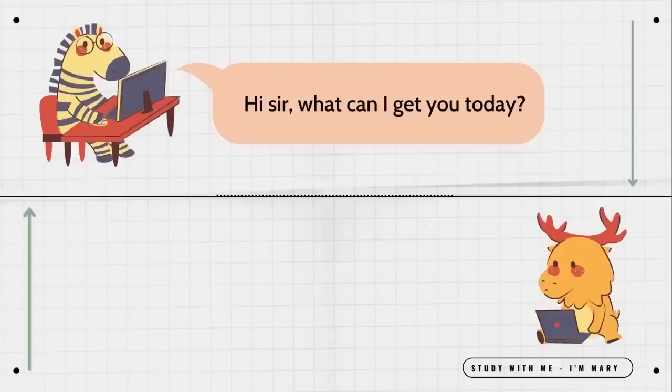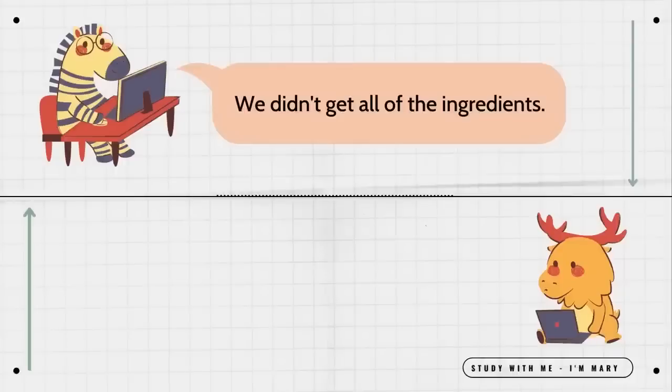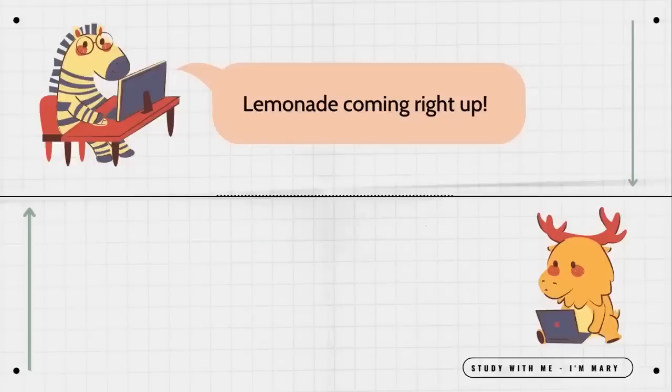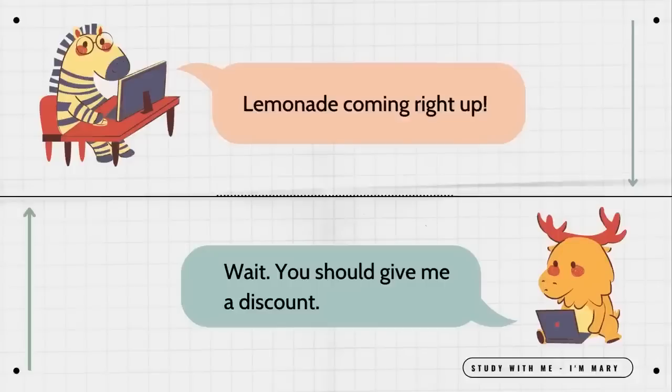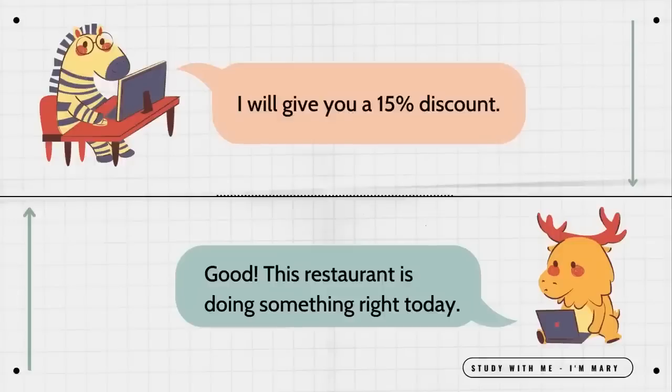Hi, sir. What can I get you today? I'll have one glass of iced tea. I'm sorry, but we are out of iced tea. How can you be out of iced tea? We didn't get all of the ingredients. Iced tea is all I want. Sir, we have plenty of other drinks. I guess lemonade would be okay. Lemonade, coming right up. Wait, you should give me a discount. I will give you a 15% discount. Good. This restaurant is doing something right today.